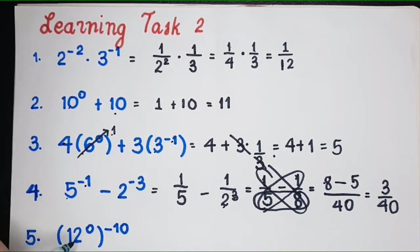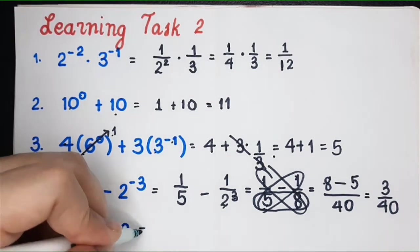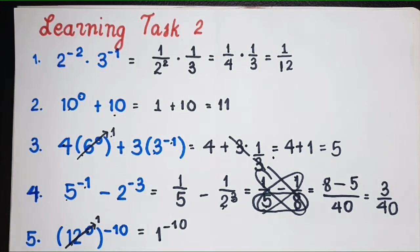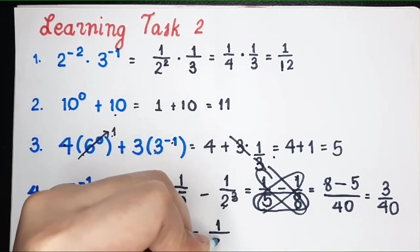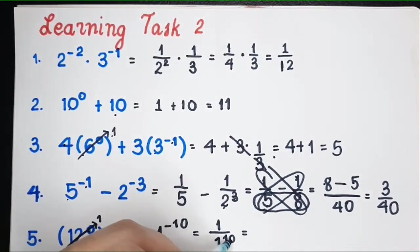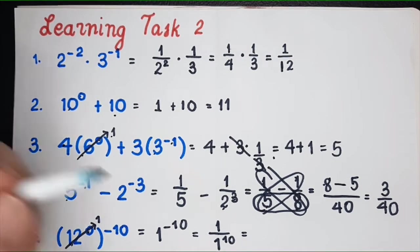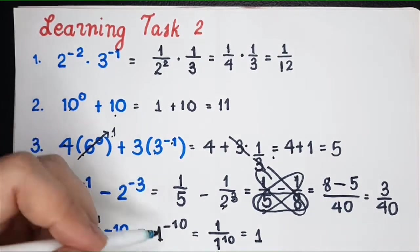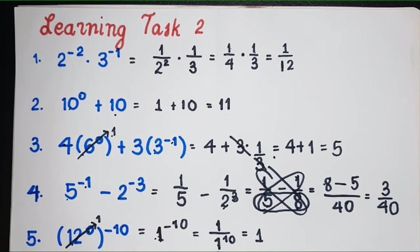For number 5, what is 12 raised to 0? It is 1. So we have 1 raised to negative 10. The answer is actually 1, because if you write it without a negative exponent, it becomes 1 over 1 raised to positive 10. And 1 raised to any power — 1 raised to 0, 1 raised to 1 million, 1 raised to negative 100 — is always equal to 1. So 1 over 1 equals 1.